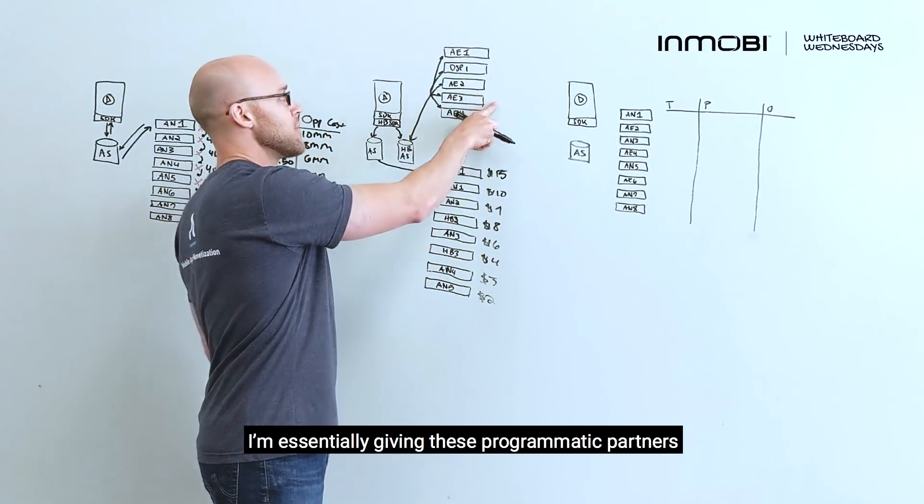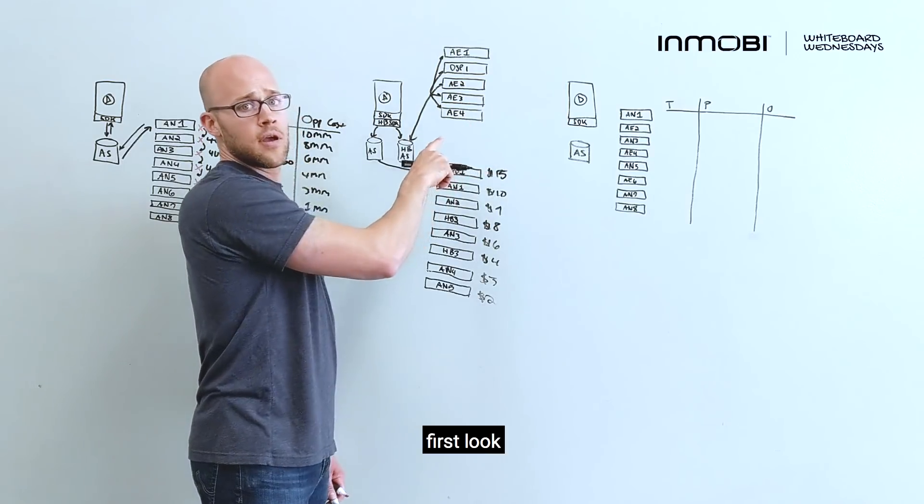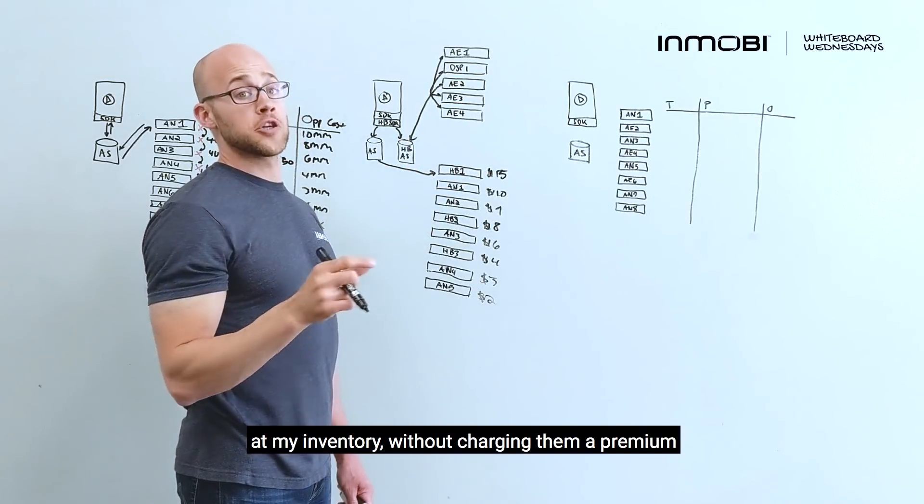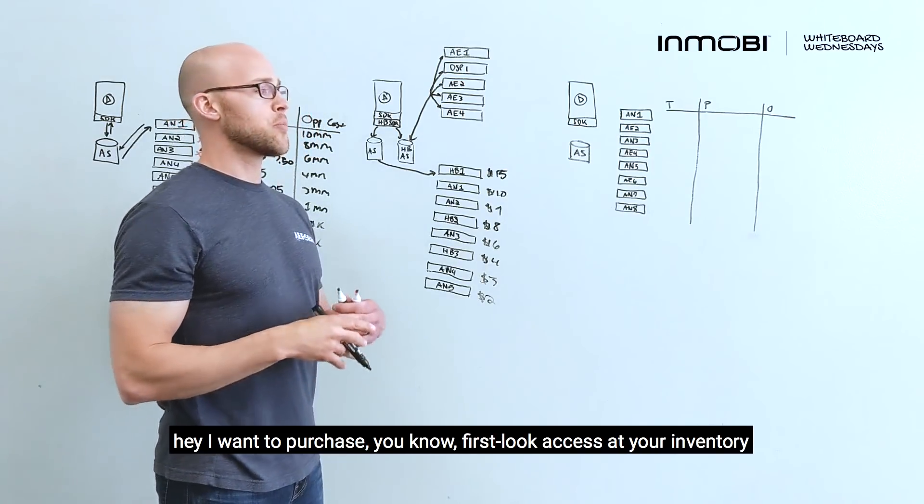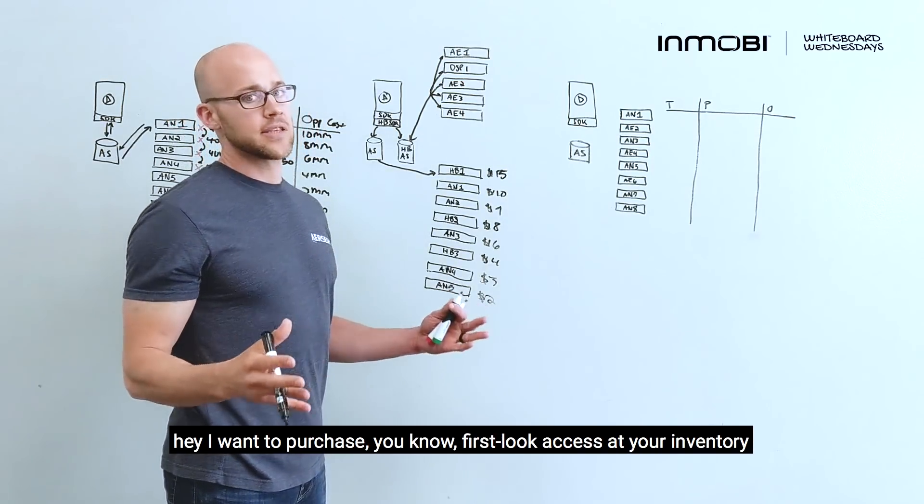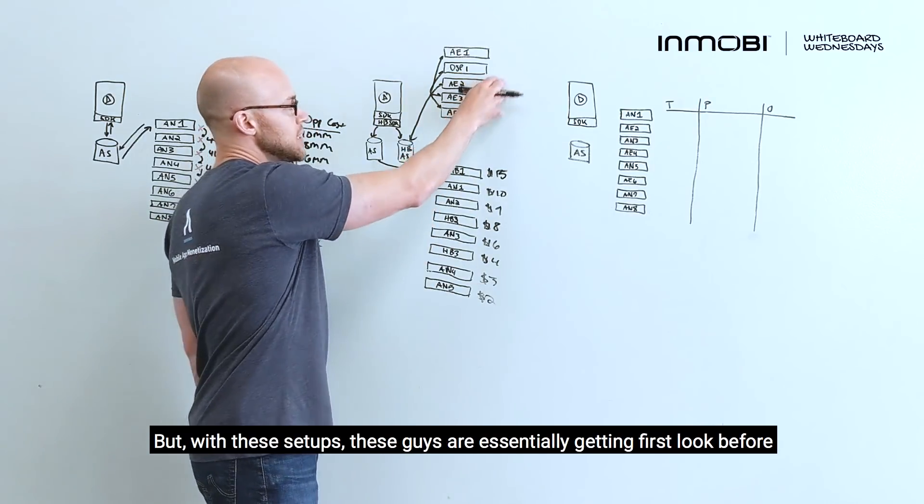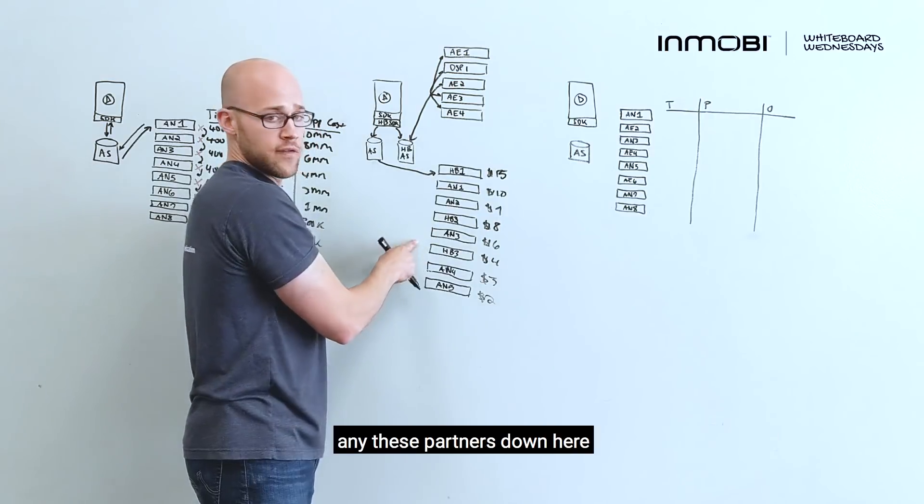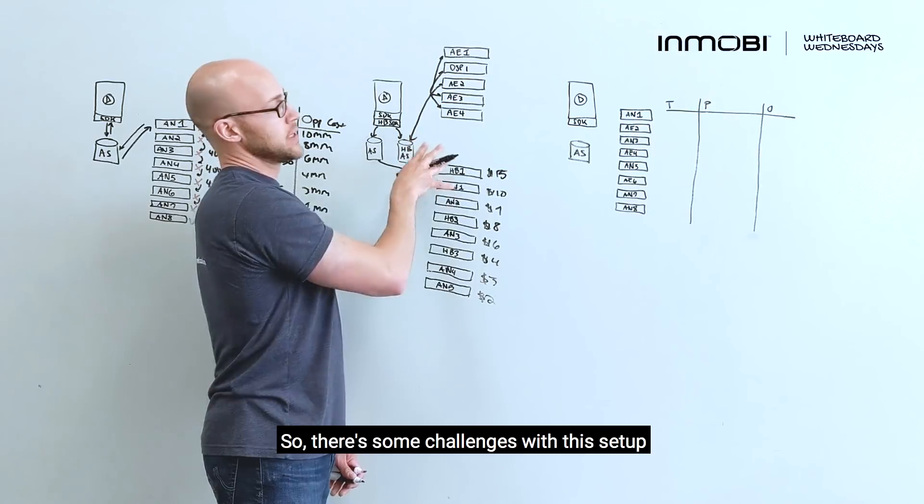The other challenge here is that I'm essentially giving these programmatic partners first look at my inventory without charging them a premium. And so, typically, when a buyer will come in and offer you, I want to purchase first look access at your inventory, they're going to pay a premium for that. But with these setups, these guys are essentially getting first look before any of these partners down here, which puts them in a great position. So, there's some challenges with this setup.